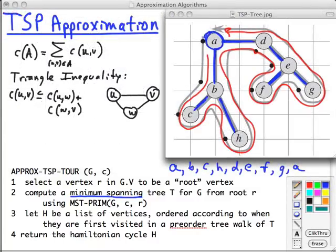So how do we show that this approximation is a polynomial time two-approximation algorithm for TSP with triangle inequality? Well, first, the algorithm is correct because it produces a Hamiltonian circuit. This is a Hamiltonian circuit. It does visit each vertex once and returns to the original vertex. We know it's polynomial time because the most expensive operation here is Prim's algorithm, which is order of E log V. And so it's polynomial.